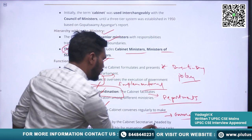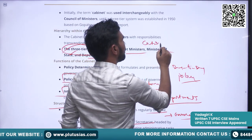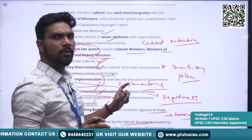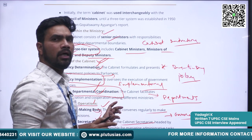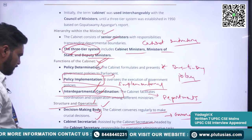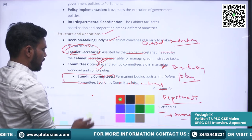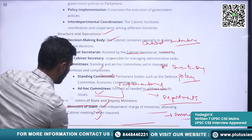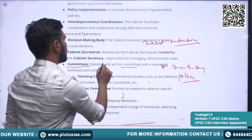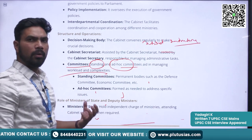Regarding the cabinet secretariat — in discharging its functions, the cabinet takes help of the cabinet secretary. There is a secretariat under the leadership of the cabinet secretary that helps ministers in discharging their day-to-day duties. There are also cabinet committees formed from time to time to discharge the functions of the government effectively. Both standing and ad-hoc committees aid in managing the workload and complexities of government.